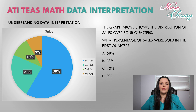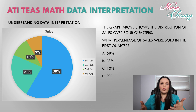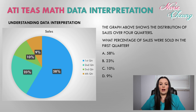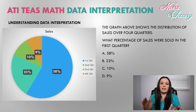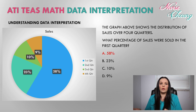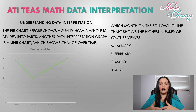Let's take a look at an example. The graph above shows the distribution of sales over four quarters. What percentage of sales were sold in the first quarter? Options are A) 58%, B) 23%, C) 10%, or D) 9%. To solve this, we look at the four colors on the pie chart representing the four quarters. The answer key on the right shows blue corresponds to the first quarter, and blue is the largest portion, so the answer is A, 58%. A pie chart visualizes how a whole is divided into parts.